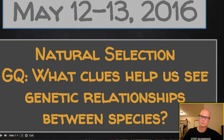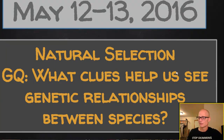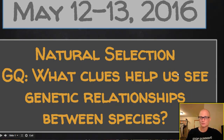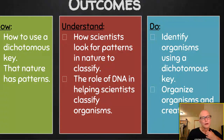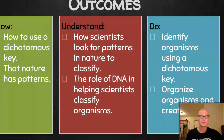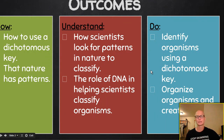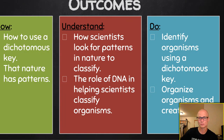Thursday and Friday, May 12th and 13th — this will actually continue on Monday, May 15th. It's a two-part lesson that looks like it's going to take three days, all around natural selection and the clues that nature gives us to identify relationships. We want to know how to use a dichotomous key after this, understand that nature has patterns and move on to how scientists look for patterns in nature to classify, and eventually come back to the role of DNA in helping scientists classify organisms.